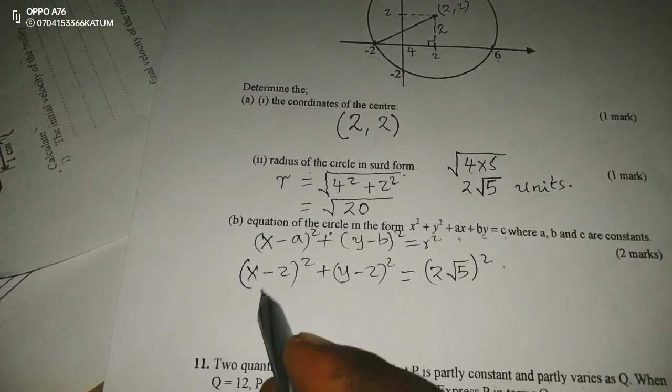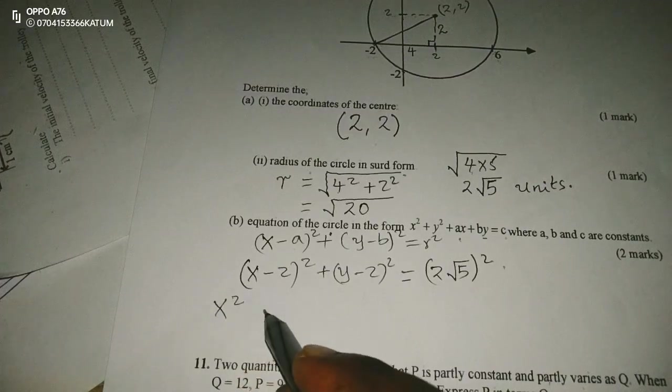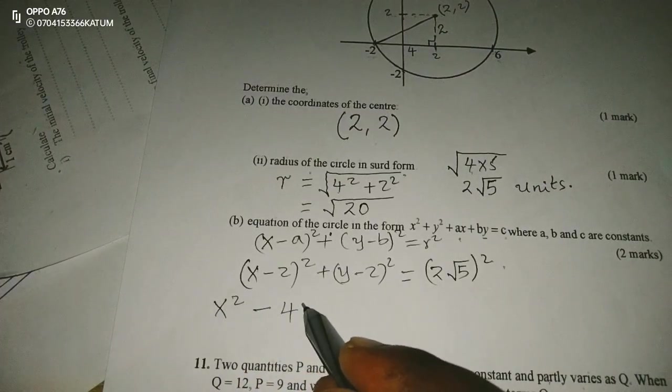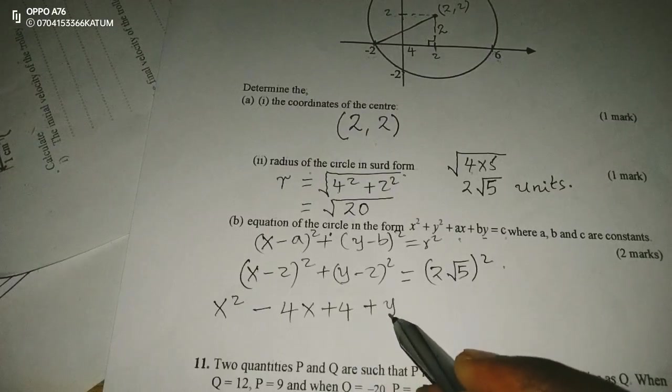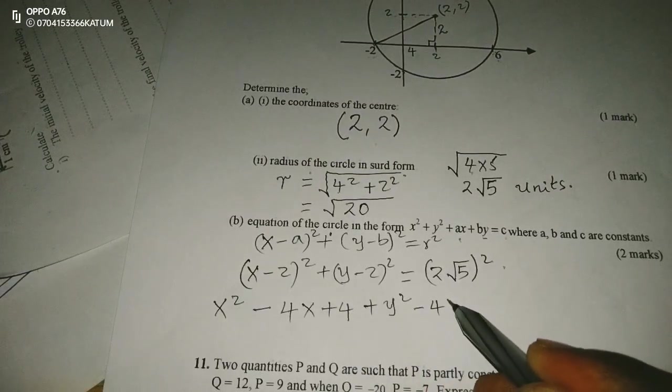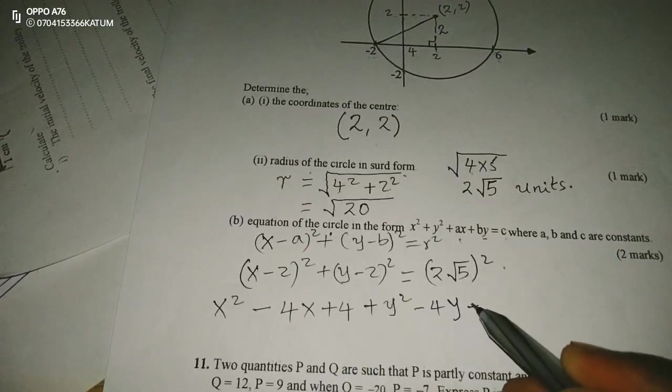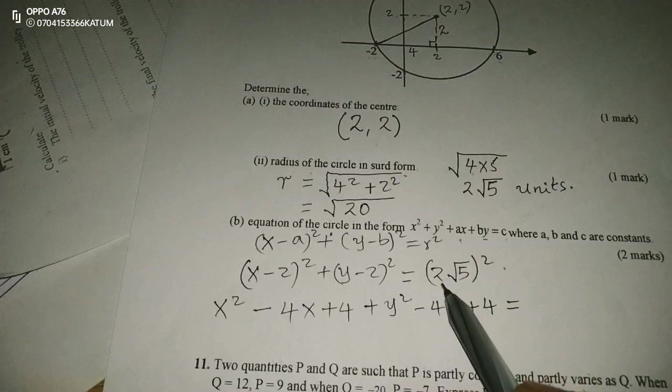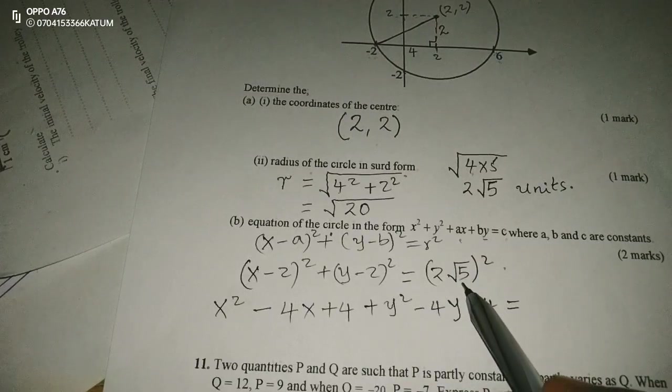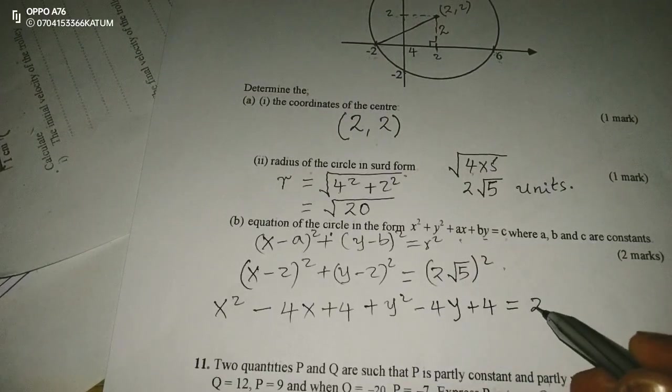When we expand all this, we're going to have x² - 4x + 4 + y² - 4y + 4. Therefore, this is equivalent to 4 multiplied by 5, which is going to be 20.